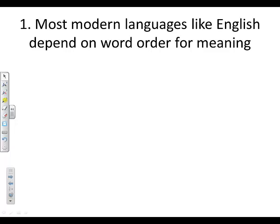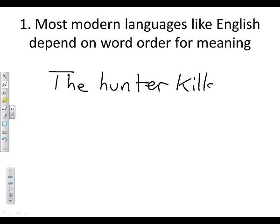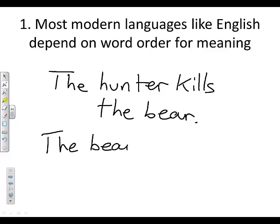Here's rule number one. Most modern languages, like English, depend on word order for meaning. So what this means is that in English, there's a big difference between saying something like 'the hunter kills the bear' and 'the bear kills the hunter.'